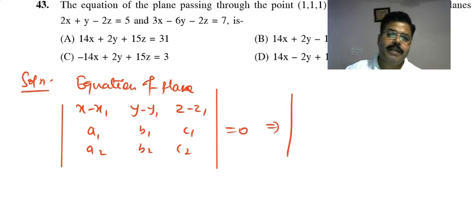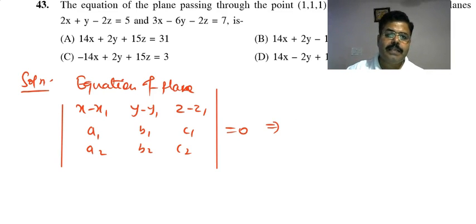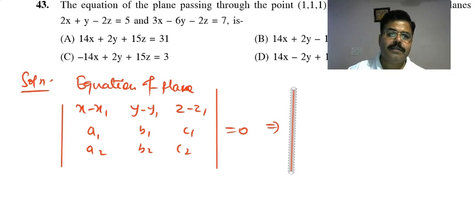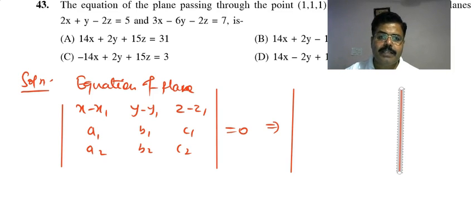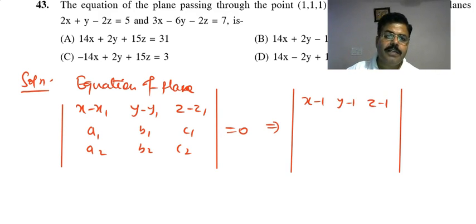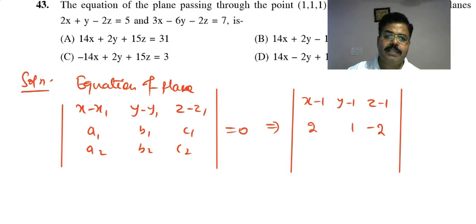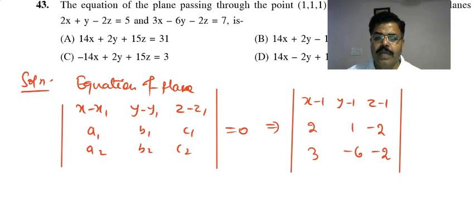Here the point is (1,1,1), so x₁=y₁=z₁=1. The first direction ratios are (2,1,-2) and the second are (3,-6,-2). Setting up the determinant: |x-1, y-1, z-1; 2, 1, -2; 3, -6, -2| = 0.